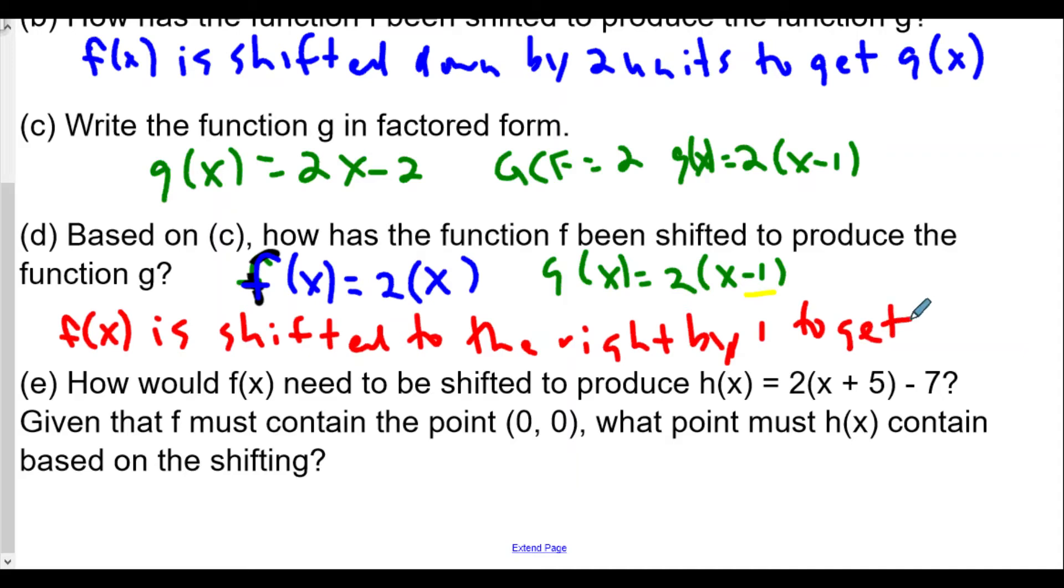It's interesting: when we looked at part (b), it says f(x) shifted down by two units to get g(x), but when we look at the factored form for g, it looks like f(x) is shifted to the right by one to get g(x). Those two different transformations will yield the same result. We should not be surprised; if we graph this, we'll see it's basically the same thing.